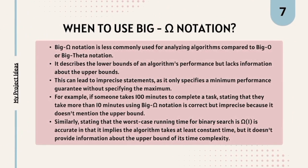Similarly, stating that the worst case running time of binary search is Big Omega of 1 is accurate in that it implies the algorithm takes at least constant time, but it doesn't provide the worst case time analysis or the upper bound. It doesn't give any information about the upper bound of the time complexity. That is why it is really important to use Big O, because it provides more precise information about the upper bound and worst case time complexity.